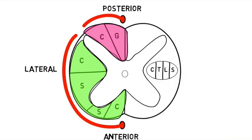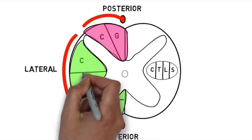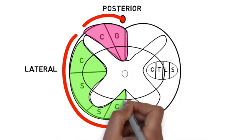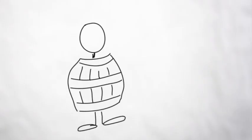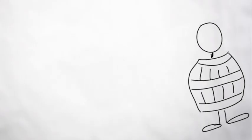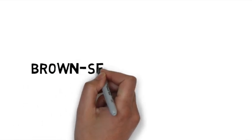The cervical, thoracic, lumbar, and sacrum. Now if you've got a central cord, this will take out your upper limbs more than your lower limbs, like a man in a barrel. And last we have Brown-Séquard syndrome.